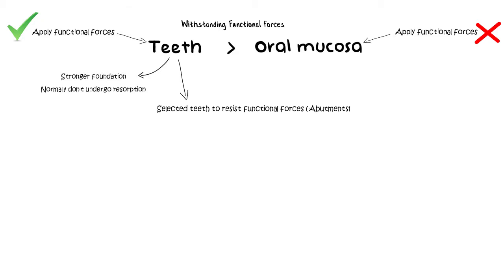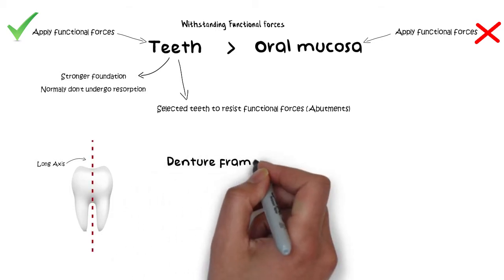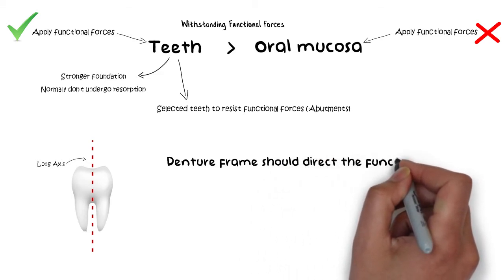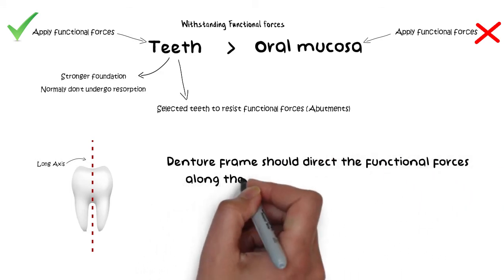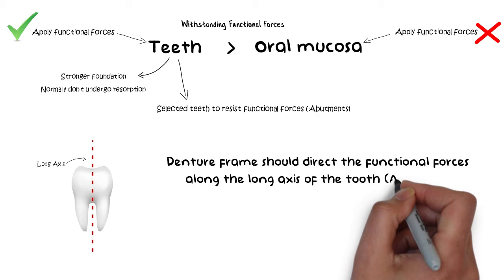Now in order to provide the most effective resistance against functional forces, the tooth must be stressed along its long axis rather than in any other direction, because it is here where the mass and the bulk of the tooth is concentrated. So the denture frame should be fabricated in such a way that it directs the functional forces along the long axis of the tooth.